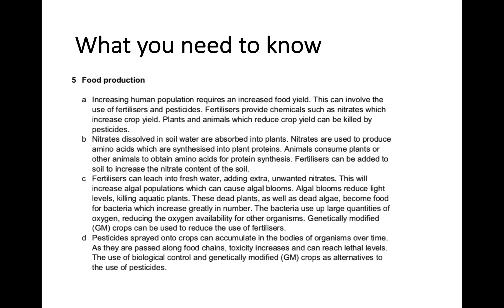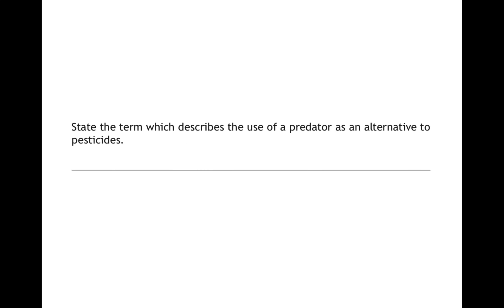Here's a past paper question: 'State the term used to describe the use of a predator as an alternative to pesticides.' Hopefully you can remember that the use of a predator is biological control, with the other alternative being genetic modification.